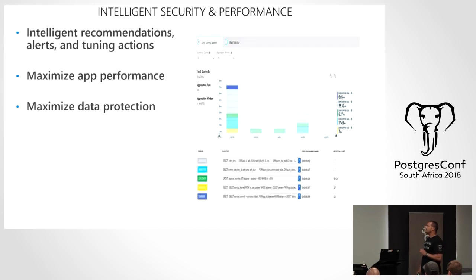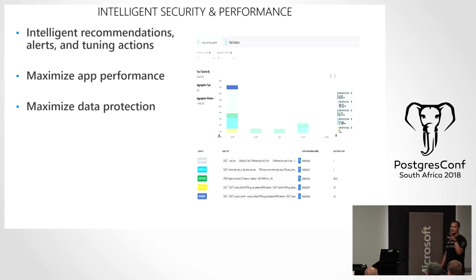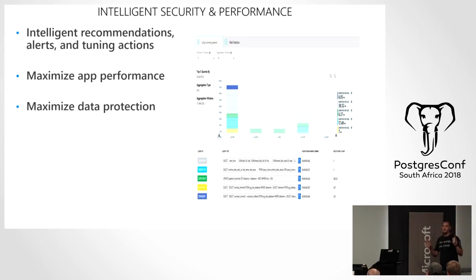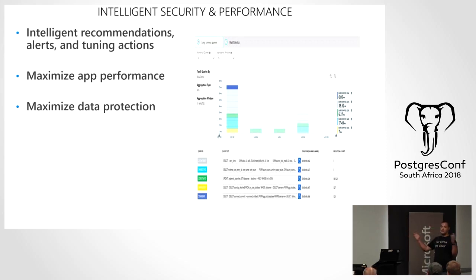The intelligent security and performance combines ATP with the query store and an AI-backed methodology. The interesting thing about the AI is we don't just use your system's data — we anonymize all data from all database systems in the PaaS environment, look at heuristics, baselines, outliers, and exceptions, and then apply that collective knowledge to how your system should be working. It's really, really great.